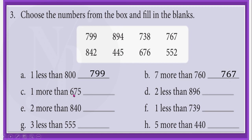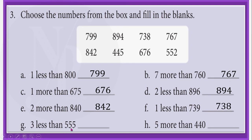C: one more than 675 is 676. D: two less than 896 is 894. E: two more than 840 is 842. F: one less than 739 is 738. G: three less than 555 is 552. H: five more than 440 is 445. So you also should fill these blanks by writing these answers, and you will find all these answers in the box.